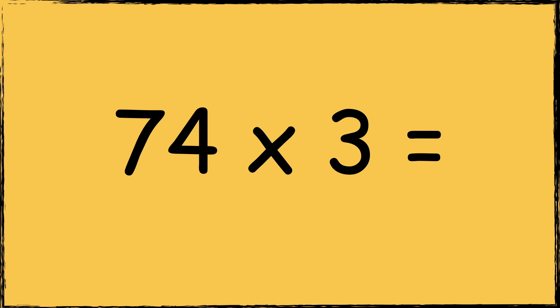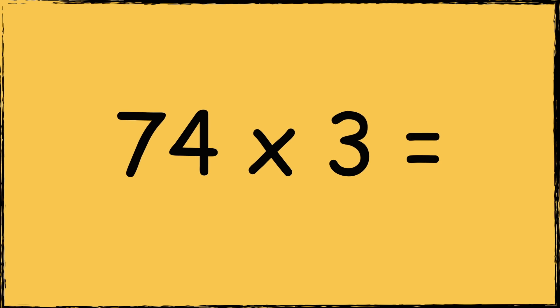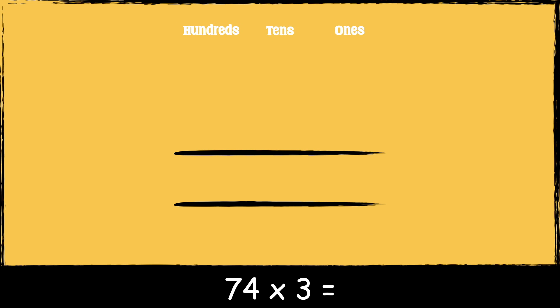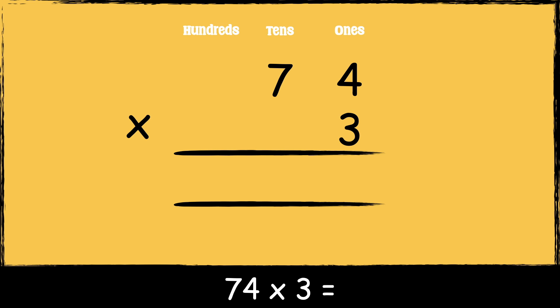Let's have a look at the next example: seventy-four times three. First we make sure the numbers are lined up accurately. The number seventy-four has four ones and it has seven tens. The number three has three ones.